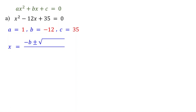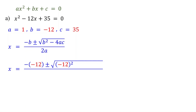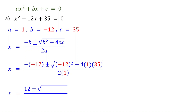Next, we write down the quadratic formula. Then, we substitute the values of a, b, and c into the formula. Now, we simplify this. In the numerator, the negative of negative 12 is positive 12. Negative 12 squared is negative 12 times negative 12, which gives us 144. 4 times 1 is 4, and 4 times 35 is 140. In the denominator, we have 2 times 1, which equals 2.